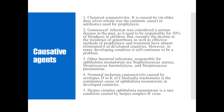Other bacterial infections responsible for ophthalmia neonatorum include Staphylococcus aureus, Streptococcus haemolyticus, and Streptococcus pneumoniae. Neonatal inclusion conjunctivitis caused by serotypes D2K of Chlamydia trachomatis is the commonest cause of ophthalmia neonatorum in developed countries. Herpes simplex ophthalmia neonatorum is a rare condition caused by herpes simplex virus type 2.